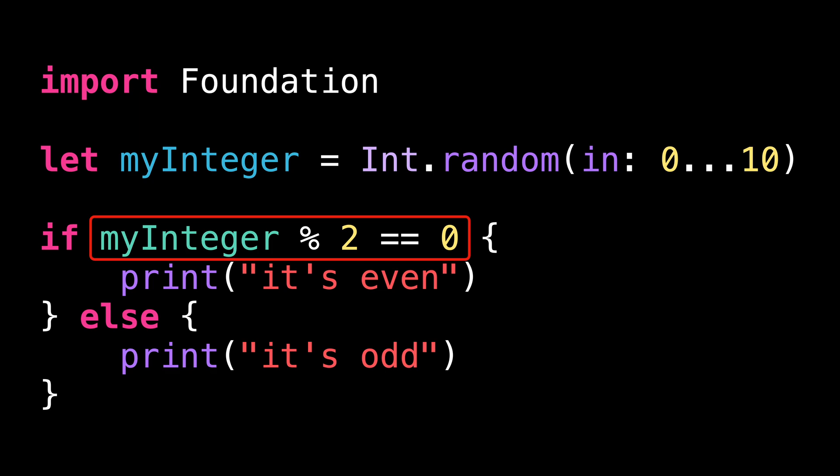Because in Swift, integers actually have access to a method called isMultipleOf. As its name suggests, this method returns a boolean and tests whether the integer is a multiple of the value passed as an argument.